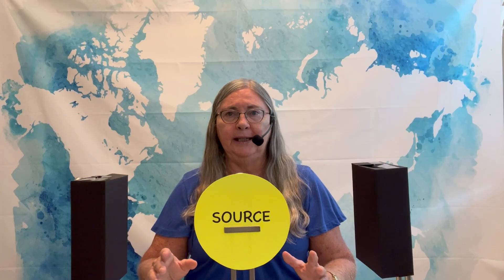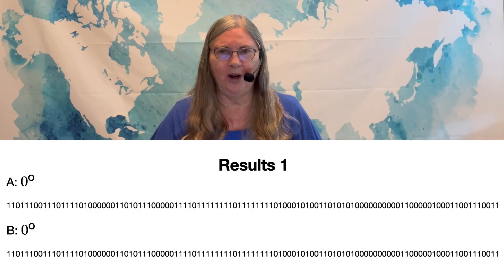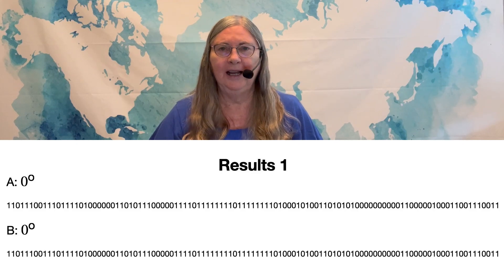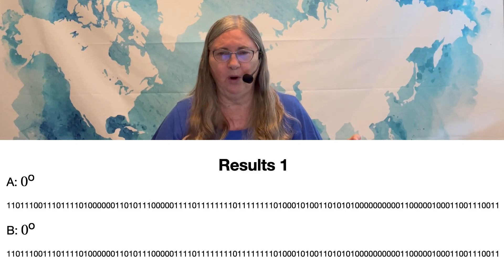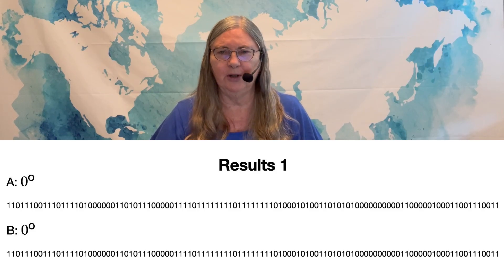For the first experiment, we keep it very simple. We'll have both detectors lined up at the same angle to each other, then wait to collect a whole bunch of photons so we'll have good statistics. Here are the results from run one: it's a random sequence of zeros and ones, where one represents vertical and zero represents horizontal — and they match completely.